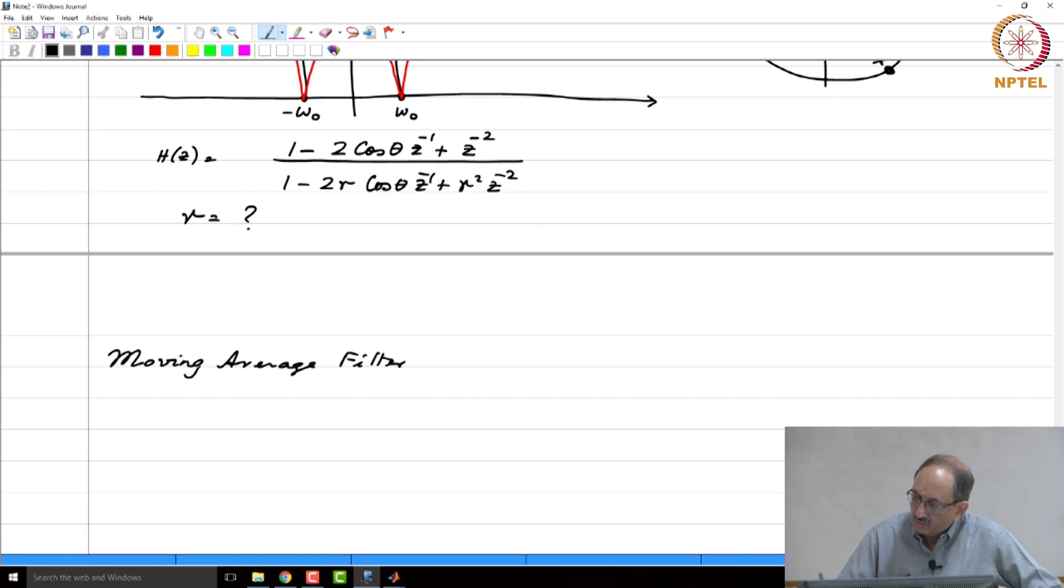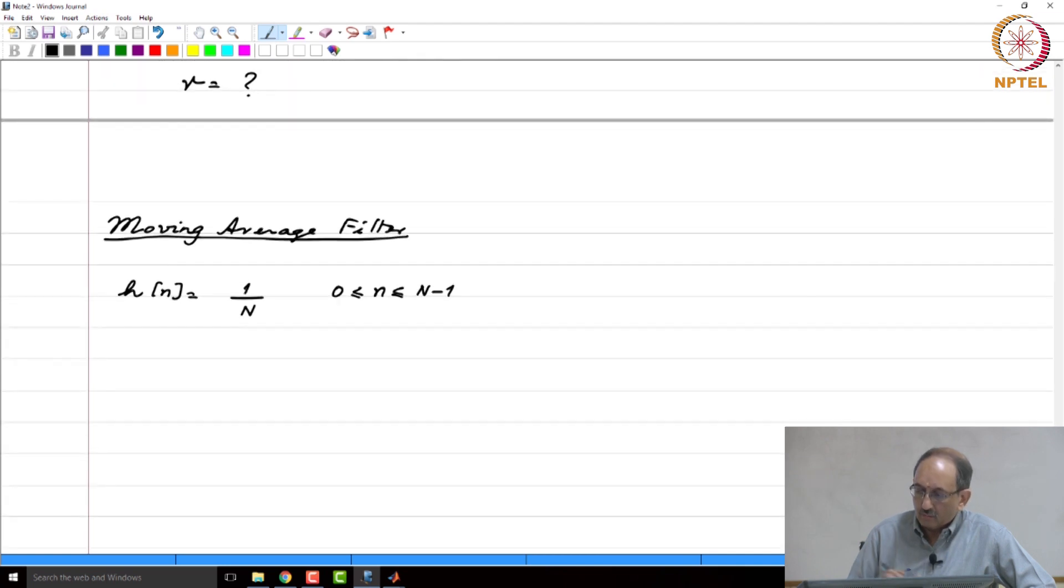We have already seen this moving average filter, and this impulse response is 1 over n from 0 to n minus 1, and we have already seen the frequency response.